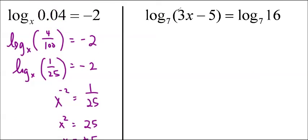The next question, log base 7 of 3x minus 5 is equal to log base 7 of 16. Now if you have the same base and you don't have anything else going on, you can actually just get rid of it and we'll equate the arguments. So 3x minus 5 is equal to 16. And then you just have to solve that as a normal algebra equation. So 3x is equal to 21 and x is equal to 7. That's the solution.